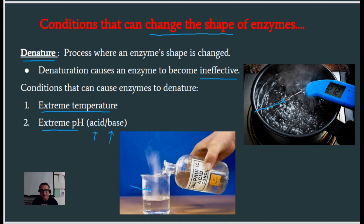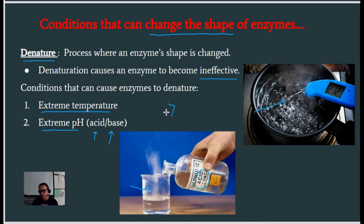Some enzymes do like it to be acidic — like enzymes in your stomach, because there's a lot of acid there. But most enzymes like it to be neutral, around a pH of 7. Remember, 7 is neutral. Anything lower than 7 is an acid, anything higher than 7 is a base. A pH of 7 would be like pure water.